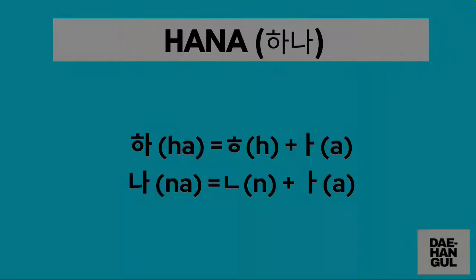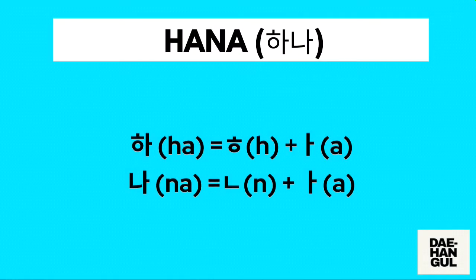How do we write 'hana' in Hangul? First, we need to draw a 'h' character followed by an 'a' character. Next, for the second syllable 'na,' we need to draw first an 'n' character followed by an 'a' character. And then we just need to combine to form the Hangul of the word 'hana.'